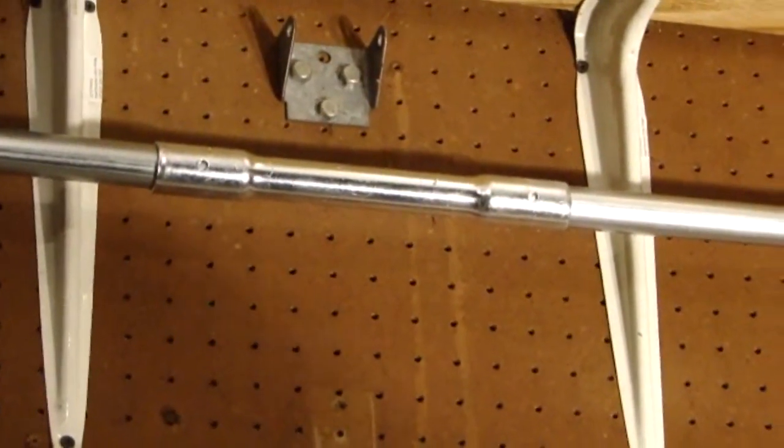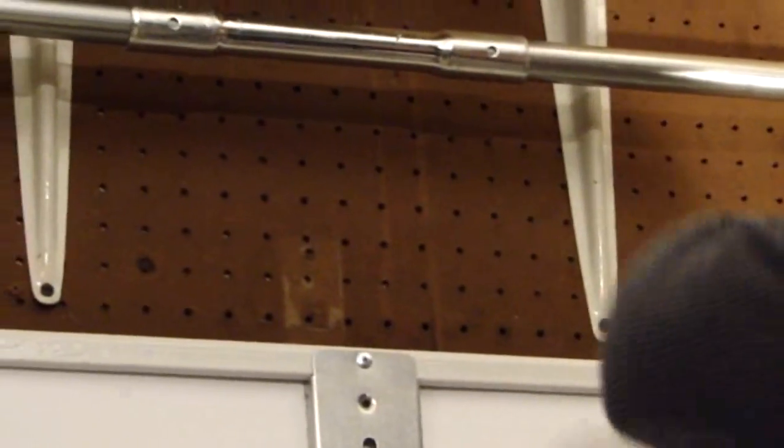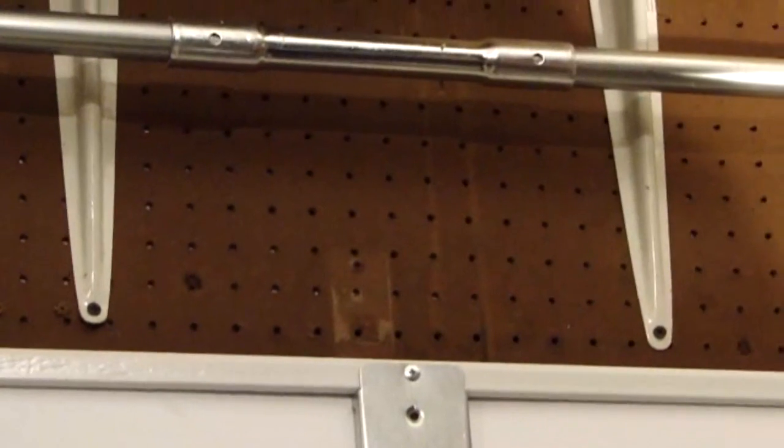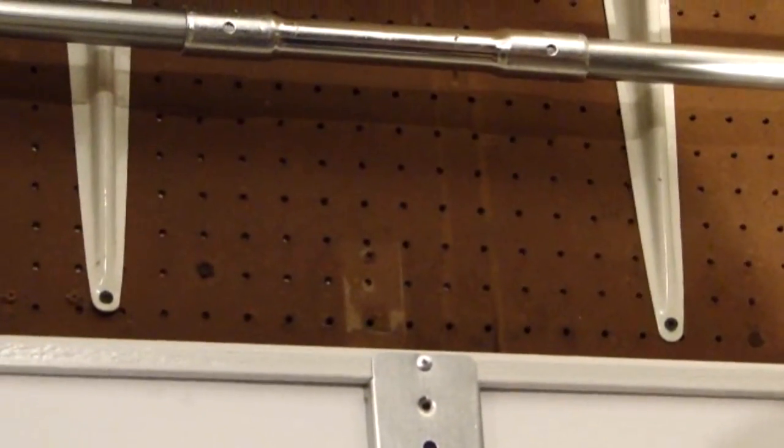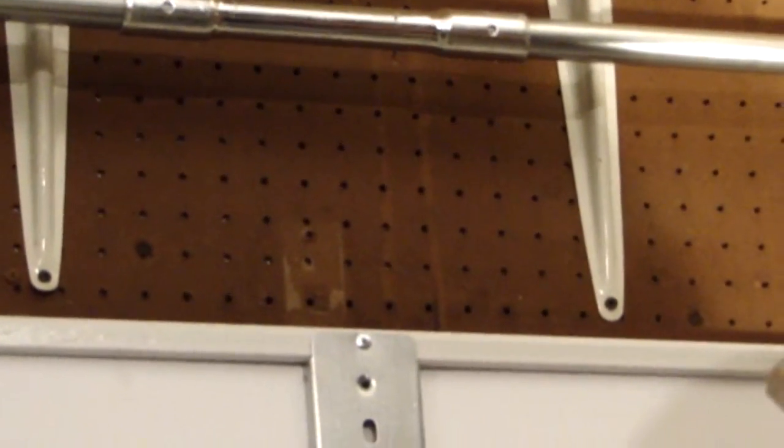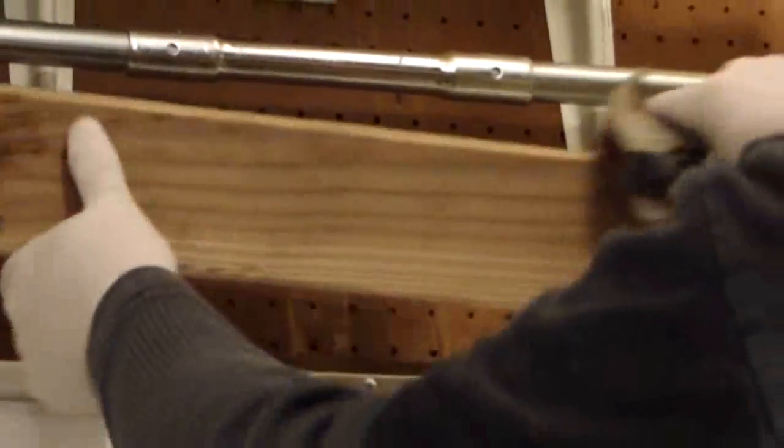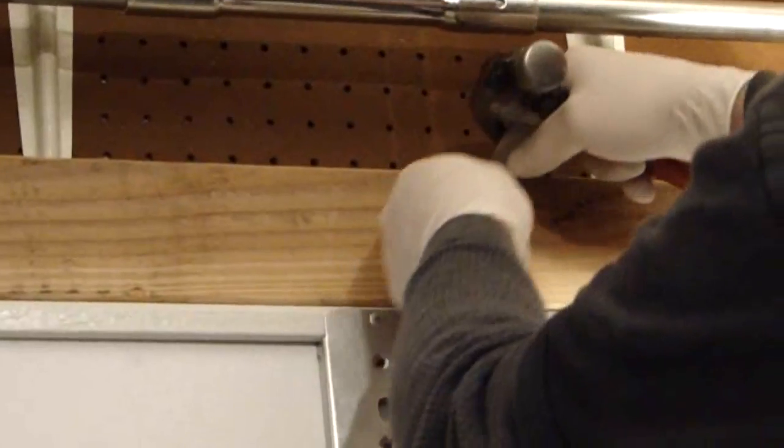Okay, before I start tensioning the torsion spring, what will happen is as we start to tension it, the garage door is going to try to raise itself up, and we don't want that to happen. So you could either use C-clamps on the rail or put something up here to hold the door so it doesn't raise itself up.